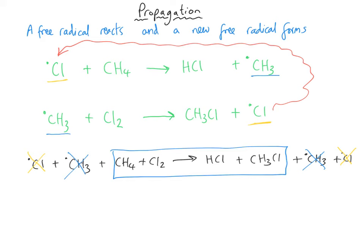Because the chlorine free radical is produced at the end of the second propagation step and can go back to the beginning, this chain reaction can take place thousands and thousands of times before the chlorine free radicals eventually get used up. The way they get used up is the final stage: termination.